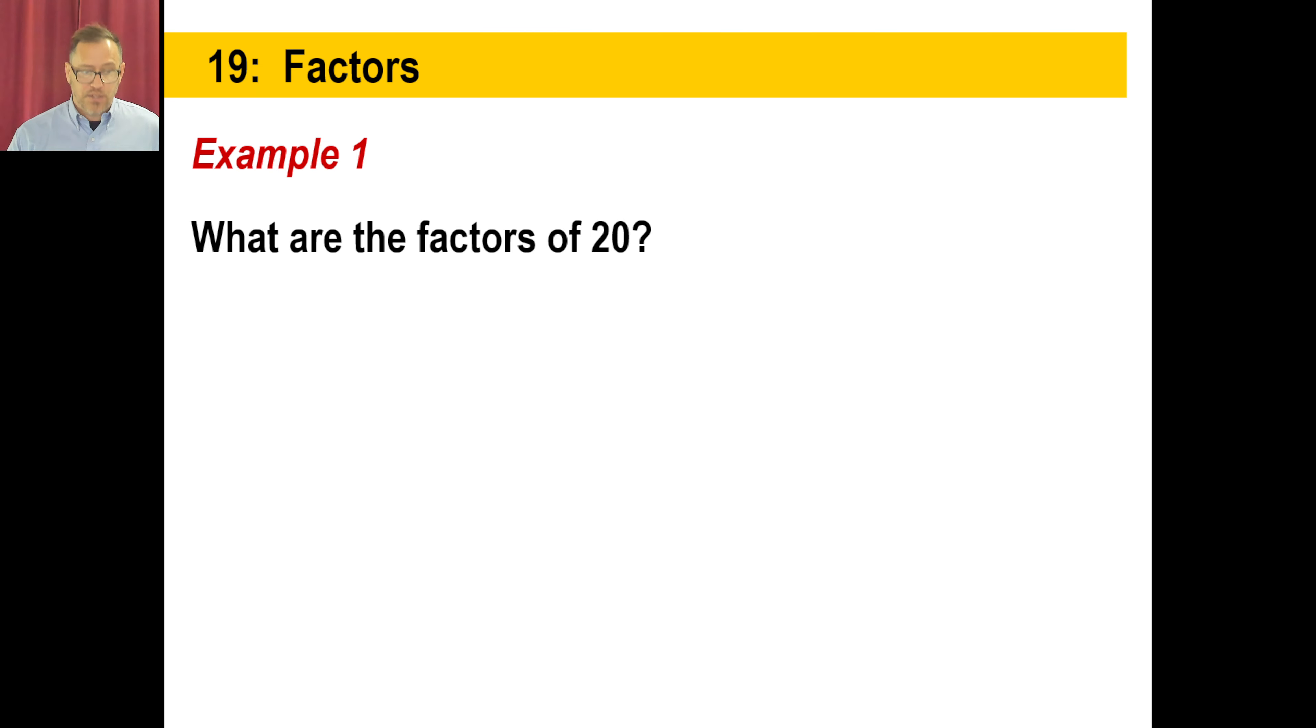In other words, what numbers go into 20 evenly? Well, obviously 1 and 20, right? Another couple, 4 and 5, and then of course 2 and 10, and that's it. You could probably put them in order from least to greatest if you want. So that's a list of the factors of 20.